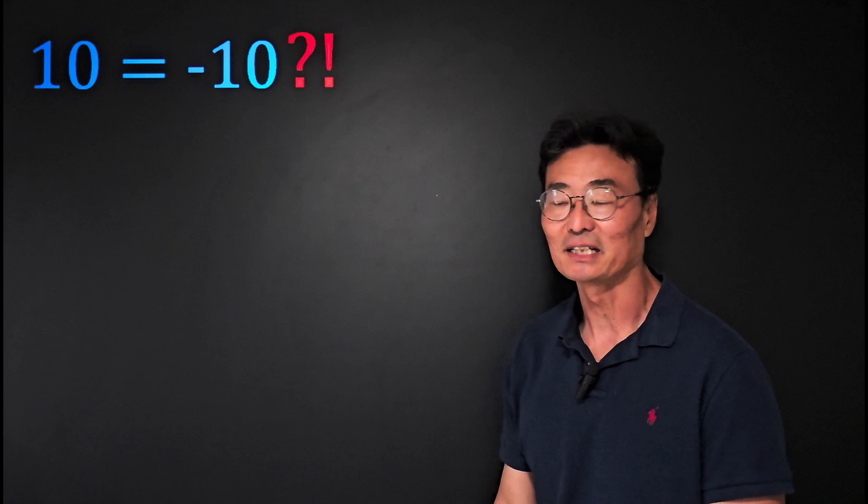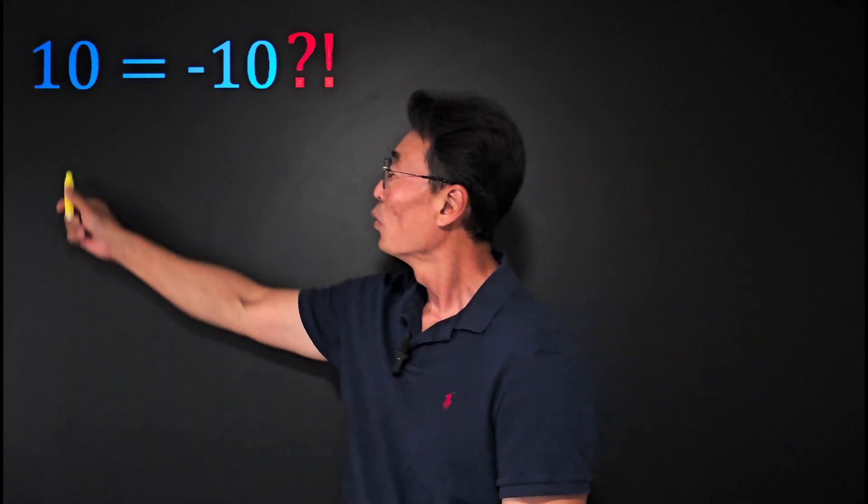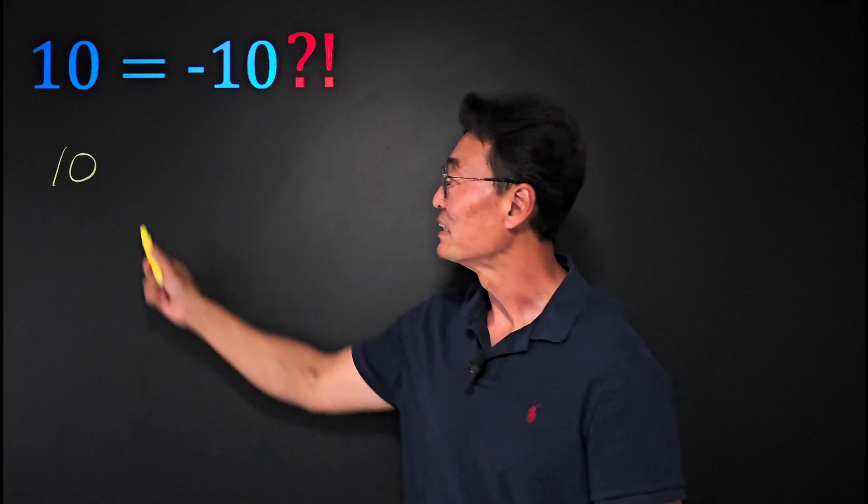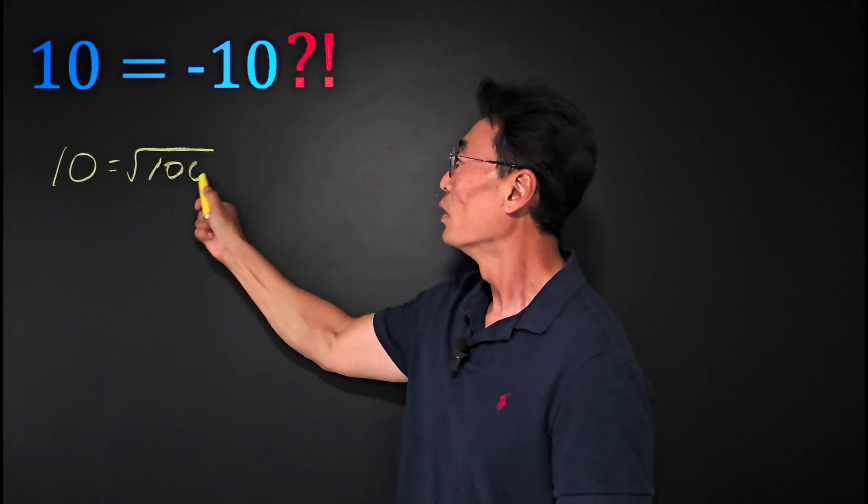Let me show you how to turn 10 into negative 10 and see if you can catch my mistake. First we'll start with 10 and set it equal to the square root of 100.